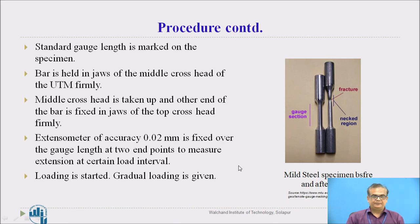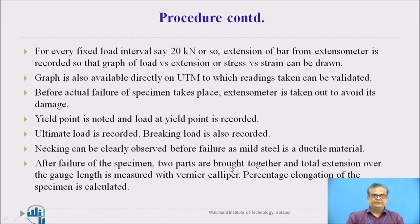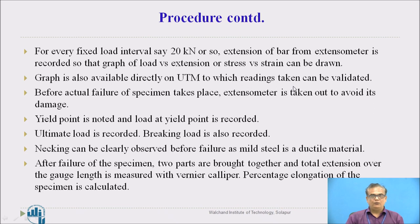Loading is given gradually — tensile loading — to the bar. For every fixed load interval of, say, 20 kN, the extension of the bar is measured with the extensometer and recorded, so that we can draw a stress-strain graph or load versus elongation graph. A graph is also directly available on the UTM, which we can use to validate results. Before actual failure of the specimen takes place, the extensometer must be removed to avoid damage. Yield point load, ultimate load, and breaking load are all recorded.